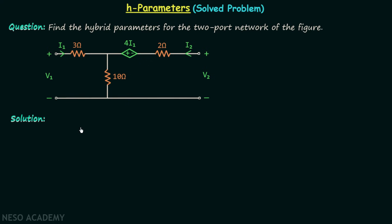We will first find the set of equations in terms of Z parameters, then use those to find the hybrid parameters. Step one is to mark all the currents in the two-port network. The current in the first branch is I1, in the second branch is I2, and applying KCL at the node gives the current in that branch as I1 plus I2.